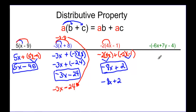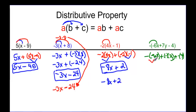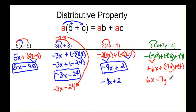Alright, one more example. We have negative one times negative six X, plus negative one times seven Y, plus negative one times negative four. A negative times a negative gives positive six X. A negative times a positive gives negative seven Y. And negative times negative four gives positive four. So rewriting it: six X minus seven Y plus four.